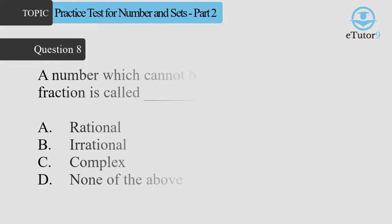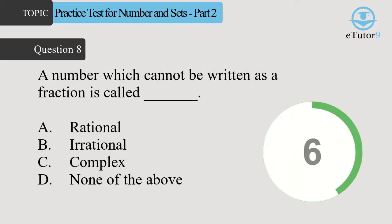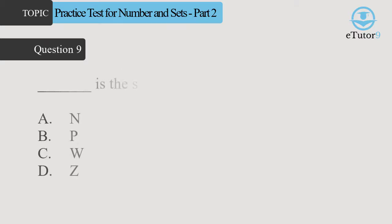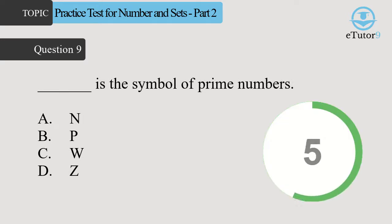Question 8. A number which cannot be written as a fraction is called blank. Answer is D. Rational. Question 9. Blank is the symbol of prime numbers. Answer is D. P.